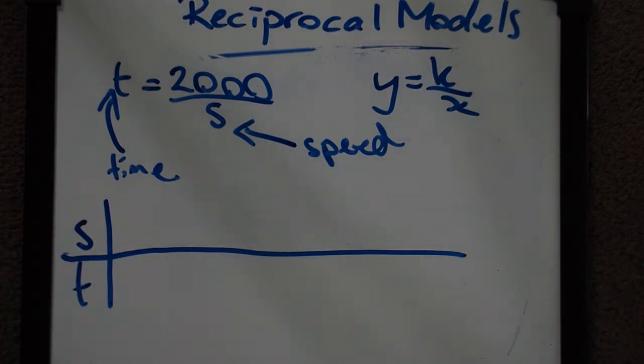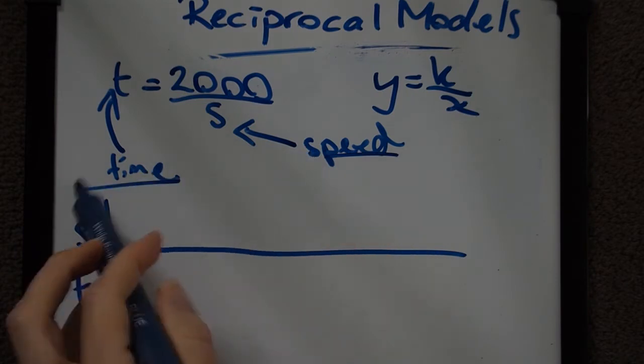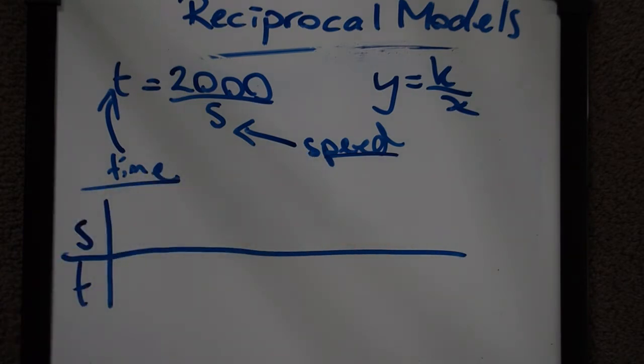Normally we would start with values surrounding the origin just to give us a pattern of what the graph is going to look like. But this is a practical situation. We're looking at speed and time. For a start we're not going to have any negative values because we can't have a negative speed and we can't have a negative time.